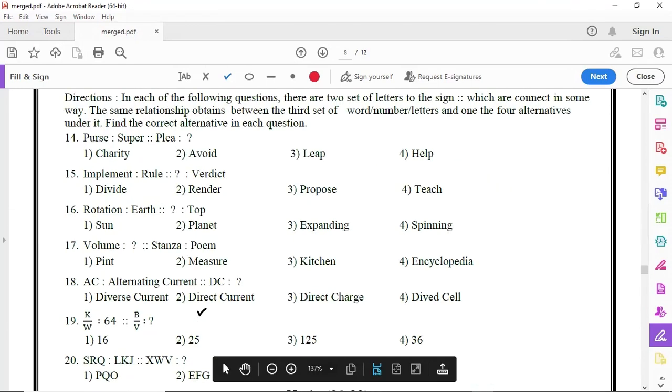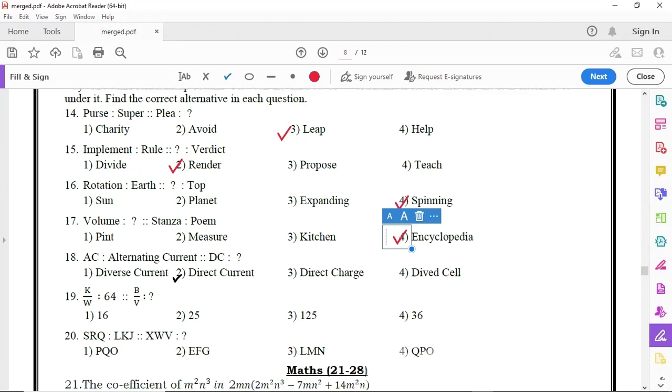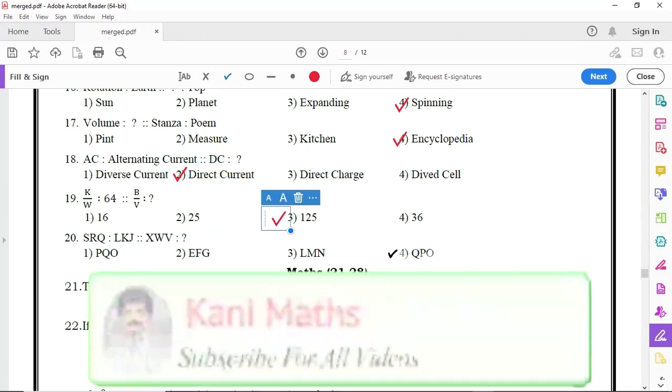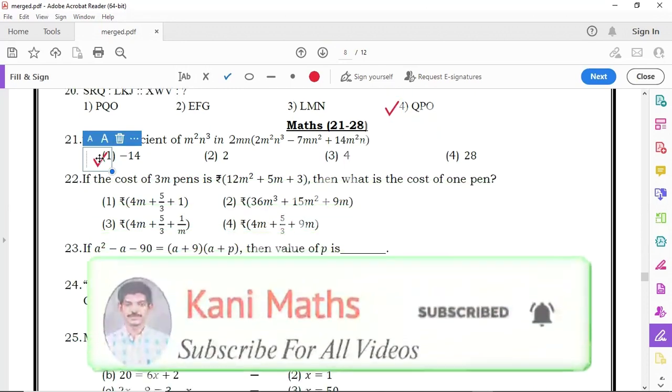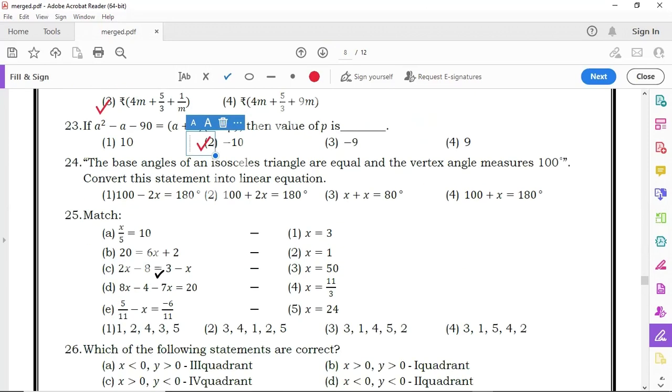13th one option 1, 14th one option 3, 15th one option 2, 16th one option 4, 17th one option 4, 18th one option 2, 19th option 3, 20 option 4, 21 option 1, 22 option 3, 23 option 2, 24 option 2.